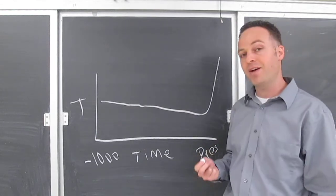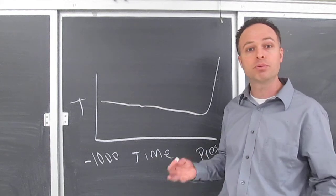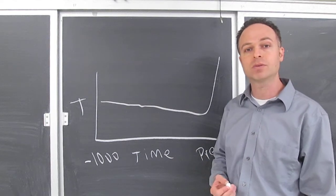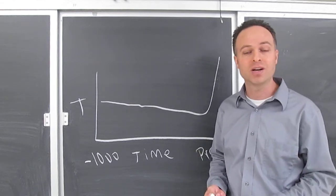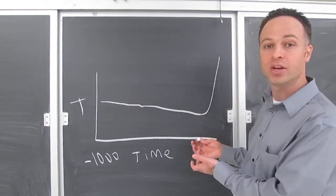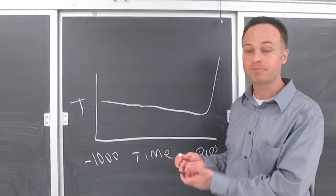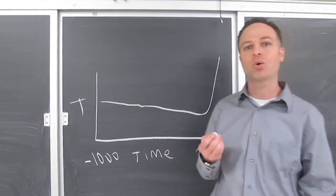If this is in fact accurate, it would basically be proof that humans are in fact responsible for the present day warming. That's why it's so controversial. Again, this would be proof that humans are in fact warming the climate. Turns out it's not quite that simple.